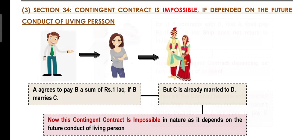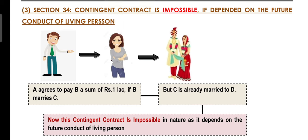Section 34 states that every Contingent Contract is impossible if performance under it is dependent on the future conduct of a living person. That means if a person enters a Contingent Contract which depends on the future conduct or act of a third person, then this event is deemed to be an impossible event.